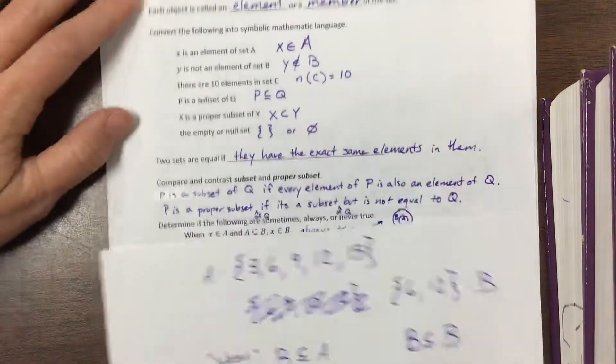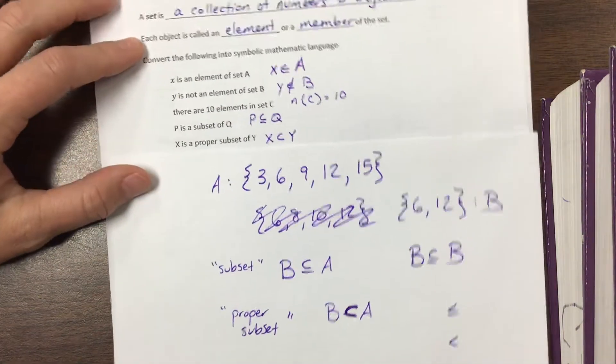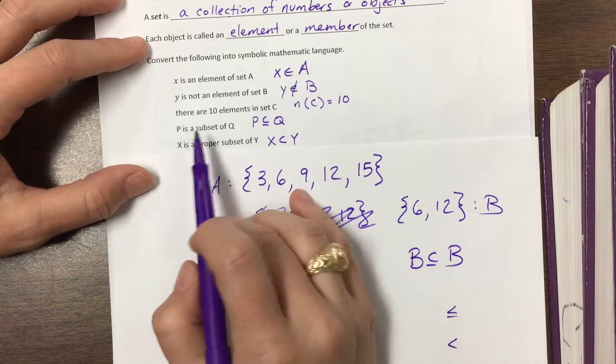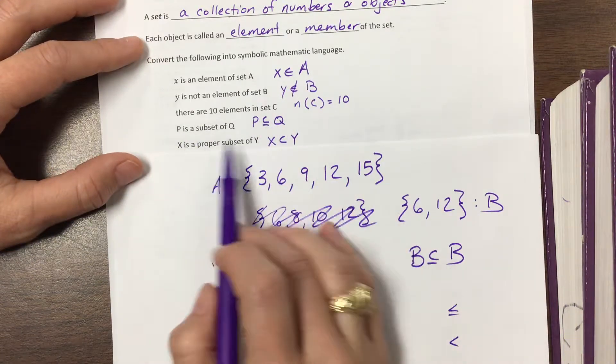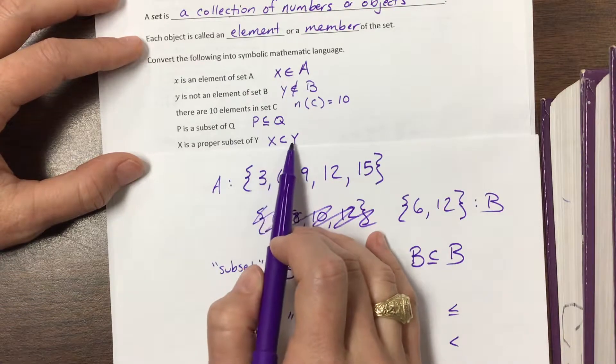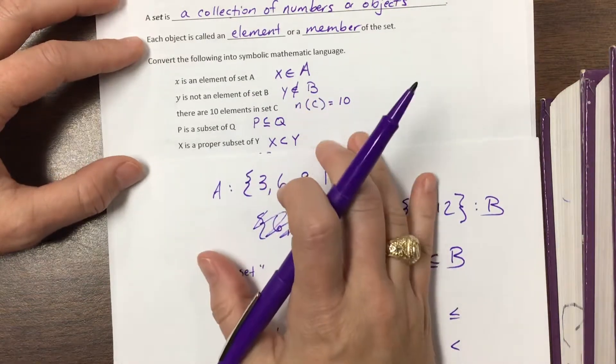And this means that B, every element in B is in A, but they're not equal. So remember how if you were to say greater than or equal to versus less than or equal to versus just a less than sign. Similar idea. This is a proper subset, meaning it's proper. The proper tells us that it could not also be equal.